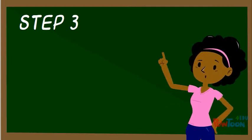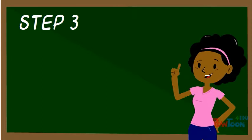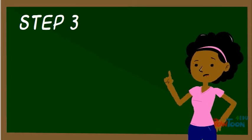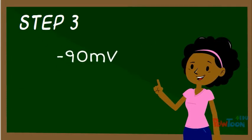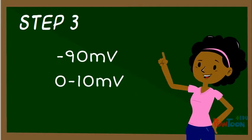Acetylcholine causes an action potential and the inside of the muscle becomes more positive. The muscle is now depolarized and goes from negative 90 millivolts up to 0 to 10 millivolts.